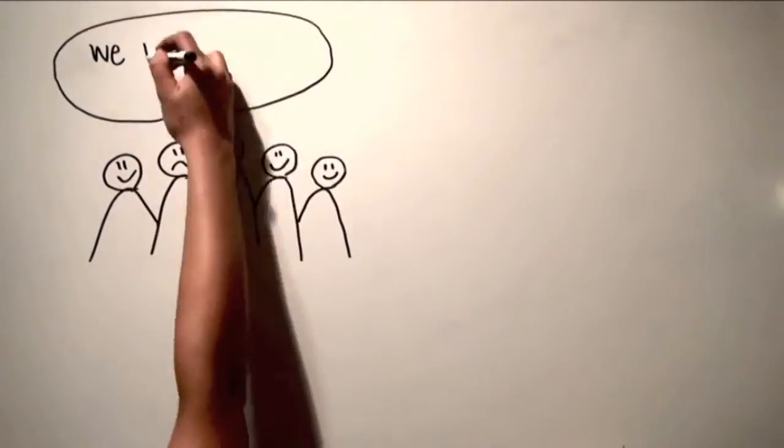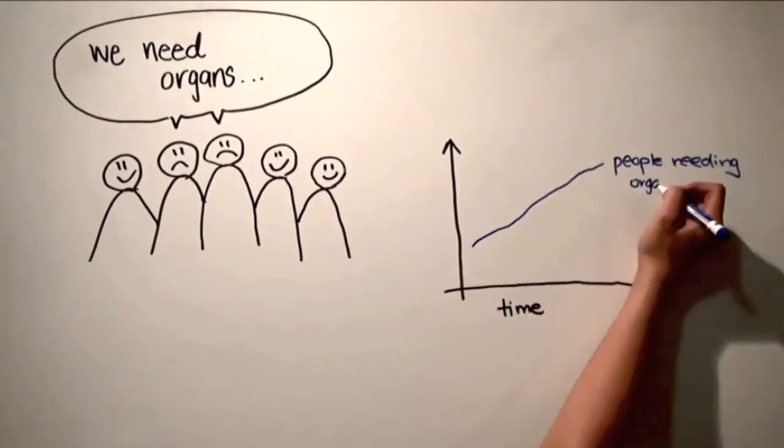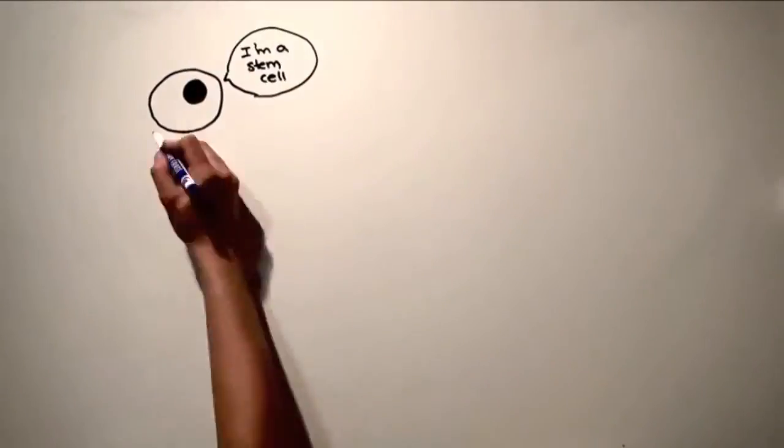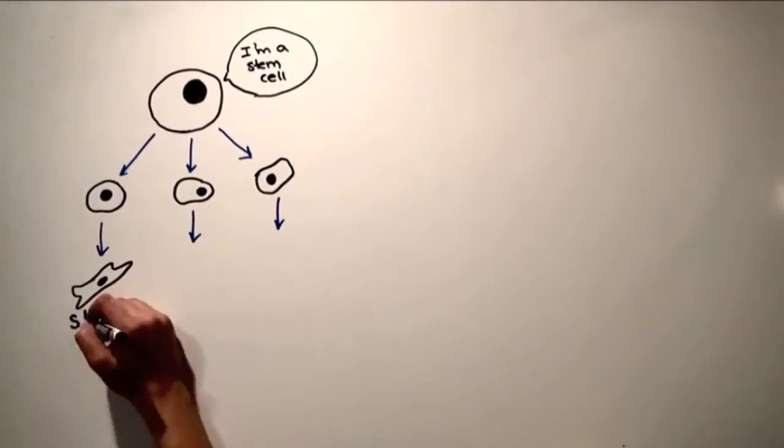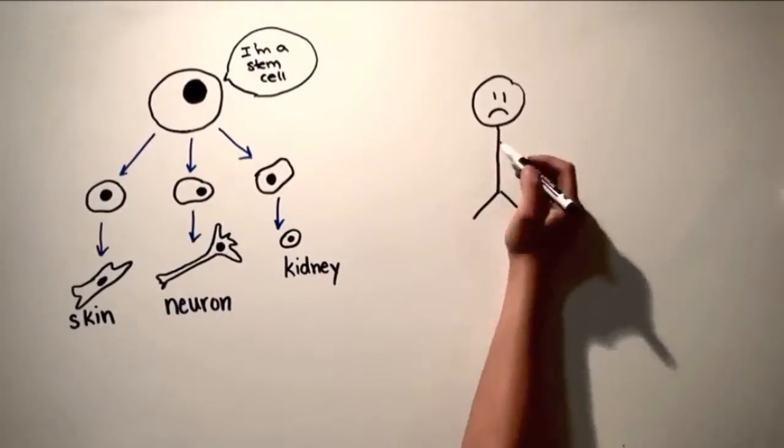Patients needing transplants are dying waiting for organ donors and unfortunately the situation is getting worse. But with the discovery of stem cells over 50 years ago in Toronto, scientists are now trying to grow tissues and organs in the lab.